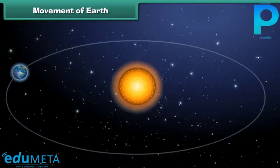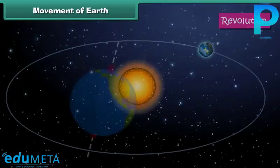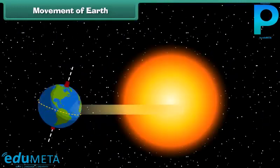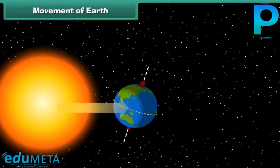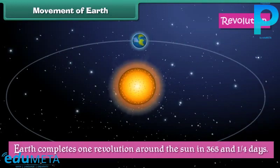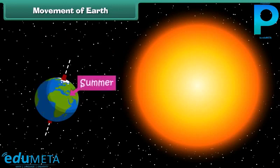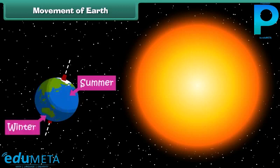Earth's movement around the Sun along a fixed path is called revolution. Revolution causes seasons to change on Earth. Earth completes one revolution around the Sun in 365 and 1/4 days, that is one year. During Earth's revolution, the part of the Earth which is closer to the Sun experiences summer, while the other part farther away from the Sun experiences winter.